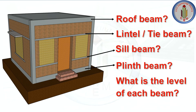Hey friends, welcome back to Civil Engineering Mass. When you take a building, there are few important levels: plinth level, lintel level, sill level, and roof level. Many of us are confused about these levels — what is plinth level, where do we provide plinth beam, why do we provide plinth beam, and what is sill level, at what height we need to provide that sill beam, what is lintel level, what is roof level.